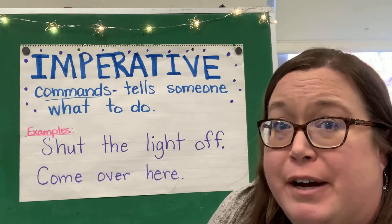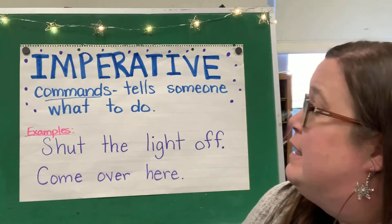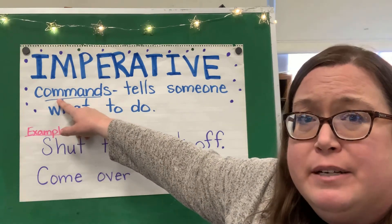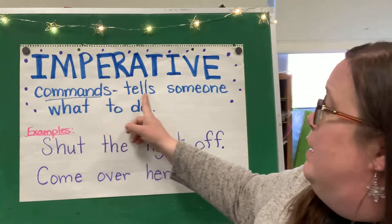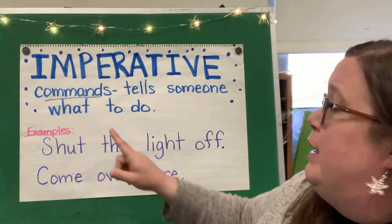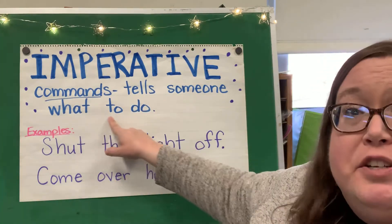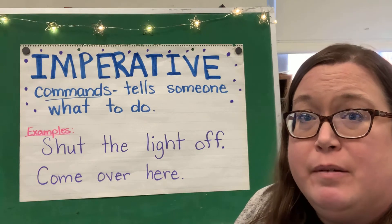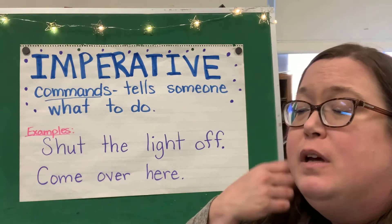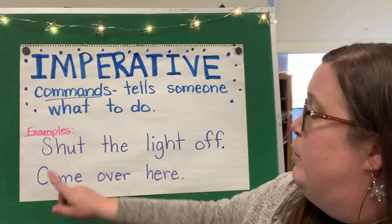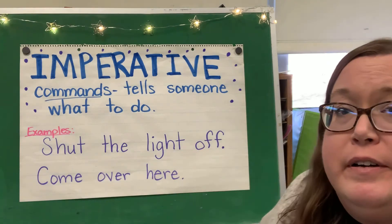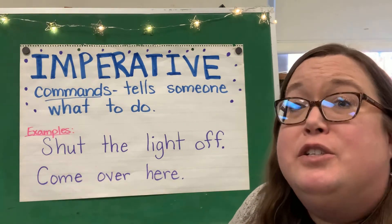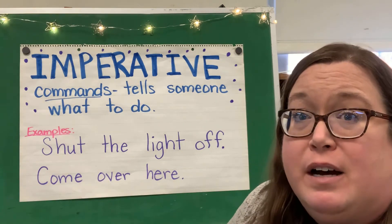An imperative type of sentence is also what's called a command. It tells someone what to do — you're telling someone to do something. An example would be: shut the light off. You're telling someone to go shut the light off.